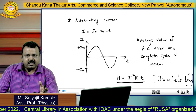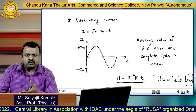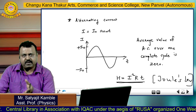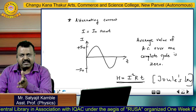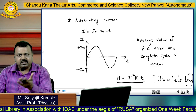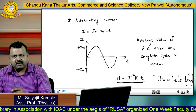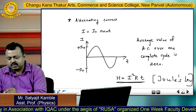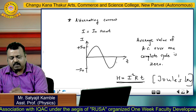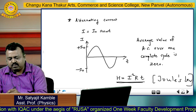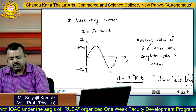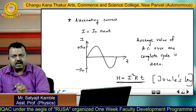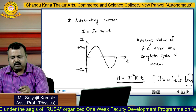Similarly, alternating current is also fluctuating in the same way as AC voltage. This is a graph of current versus time. It is also fluctuating between positive and negative value.